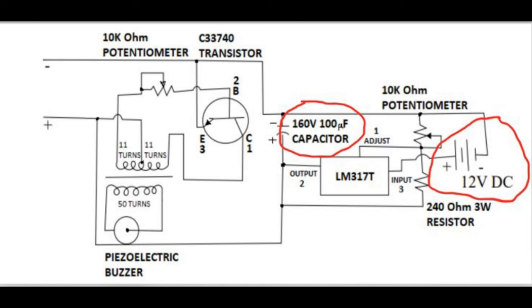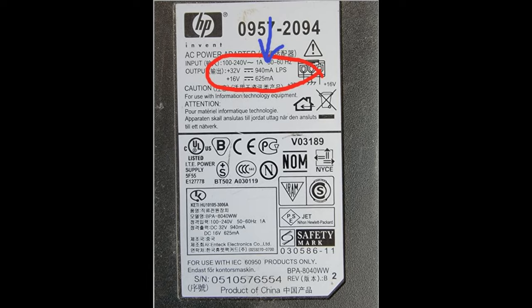On the schematic here it says 12 volts DC. However that is incorrect. Let's go ahead and take a look at the power fact that Alexi used. As you can see I marked it in the red right here. We're looking at the values. Look right here where I marked it in blue: 32 volts, 940 milliamps.